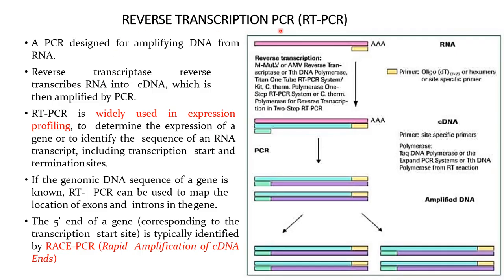Reverse transcription PCR or RT-PCR is a PCR designed for amplifying DNA from RNA. Reverse transcriptase reverse transcribes the RNA into cDNA, which is then amplified by PCR. RT-PCR is widely used in expression profiling to determine gene expression or to identify the sequence of RNA transcripts, including transcription start and termination sites. If the genomic DNA sequence of a gene is known, RT-PCR can be used to map the location of exons and introns. The 5' end of the gene corresponding to the transcript start site is typically identified by rapid amplification of cDNA ends.